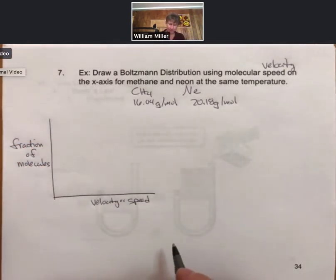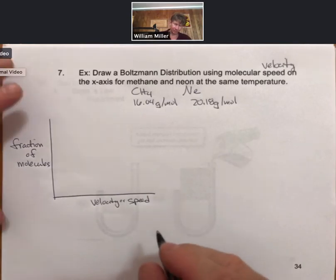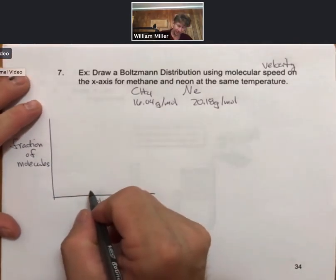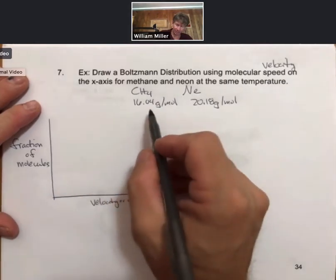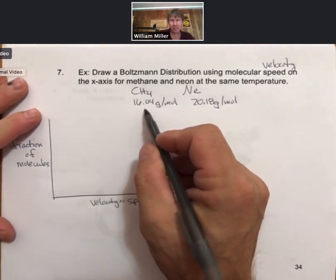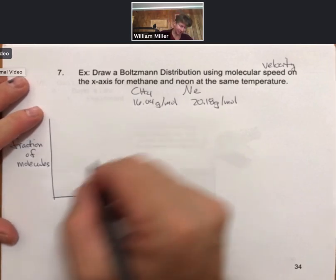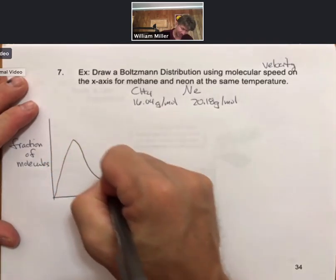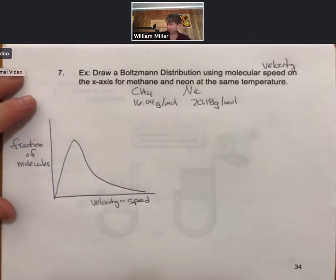And let's do two different colors. I'll do methane first, and all we need to know is that since methane has a smaller mass, each particle and a mole of it, incidentally, then it's going to be, that's a terrible one, it's not supposed to be nearly that sharp, but it will do.